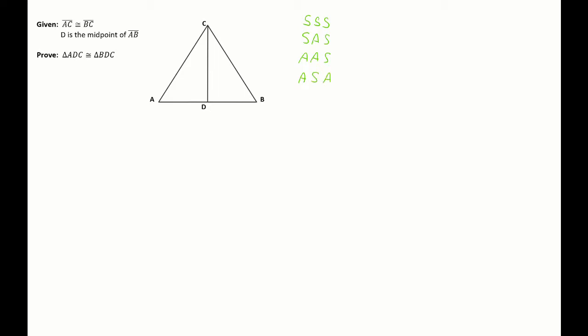And those are talking about if I can prove between the two triangles those three parts of them, for instance three sides are congruent, then I can say the triangles as a whole are congruent.